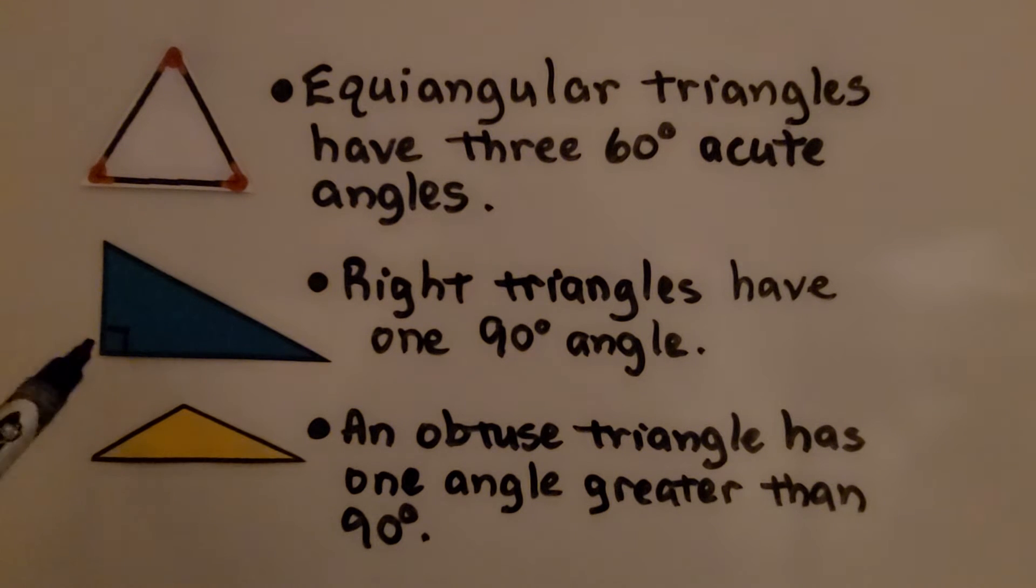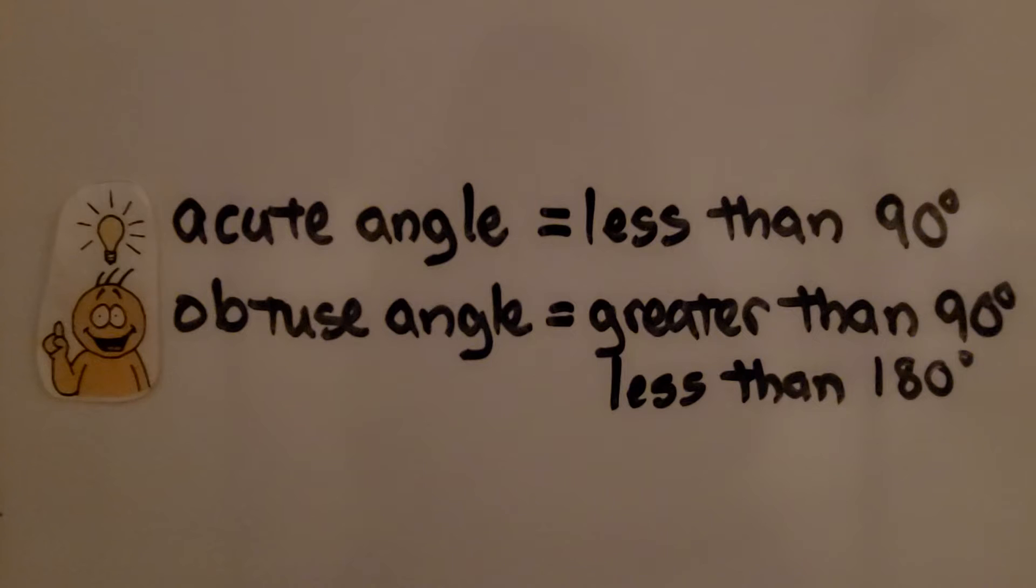Right triangles have one 90-degree angle. An obtuse triangle has one angle greater than 90 degrees. So do you remember an acute angle? That is less than 90 degrees. And an obtuse angle is greater than 90 degrees, but it's less than 180 degrees.